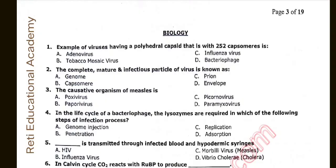Question number one: Example of viruses having a polyhedral capsid with 252 capsomers. The correct answer is A: Adenovirus. Question number two: The complete mature and infectious particle of a virus is known as. The correct option is Virion, however the correct option is not given in the options.